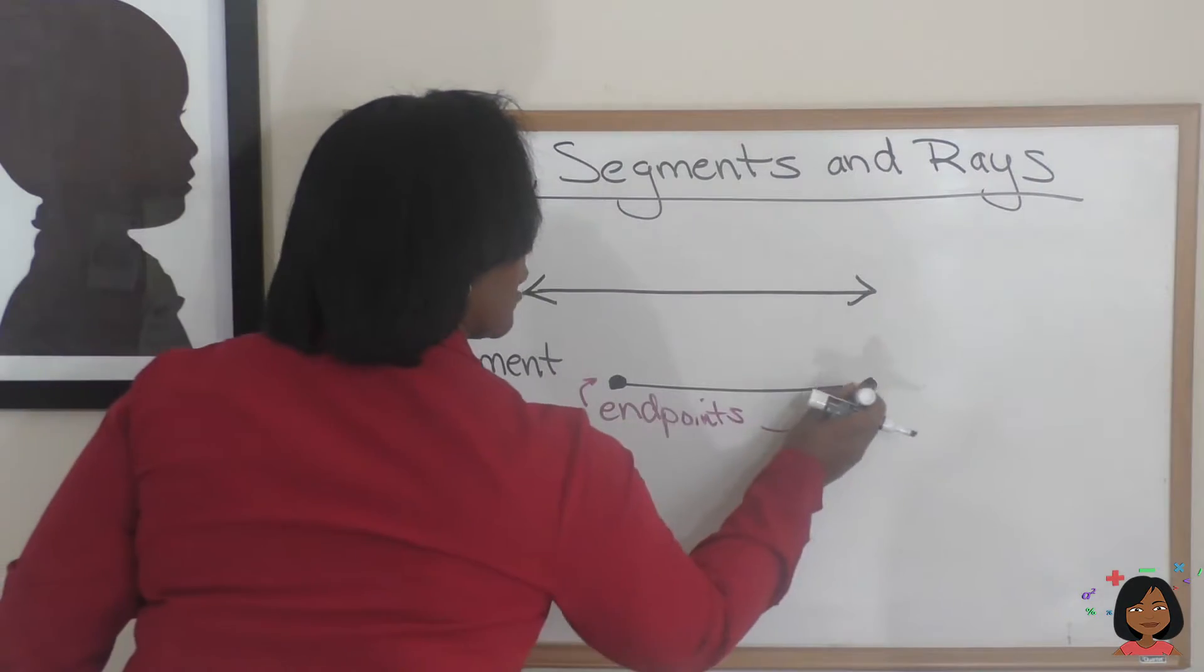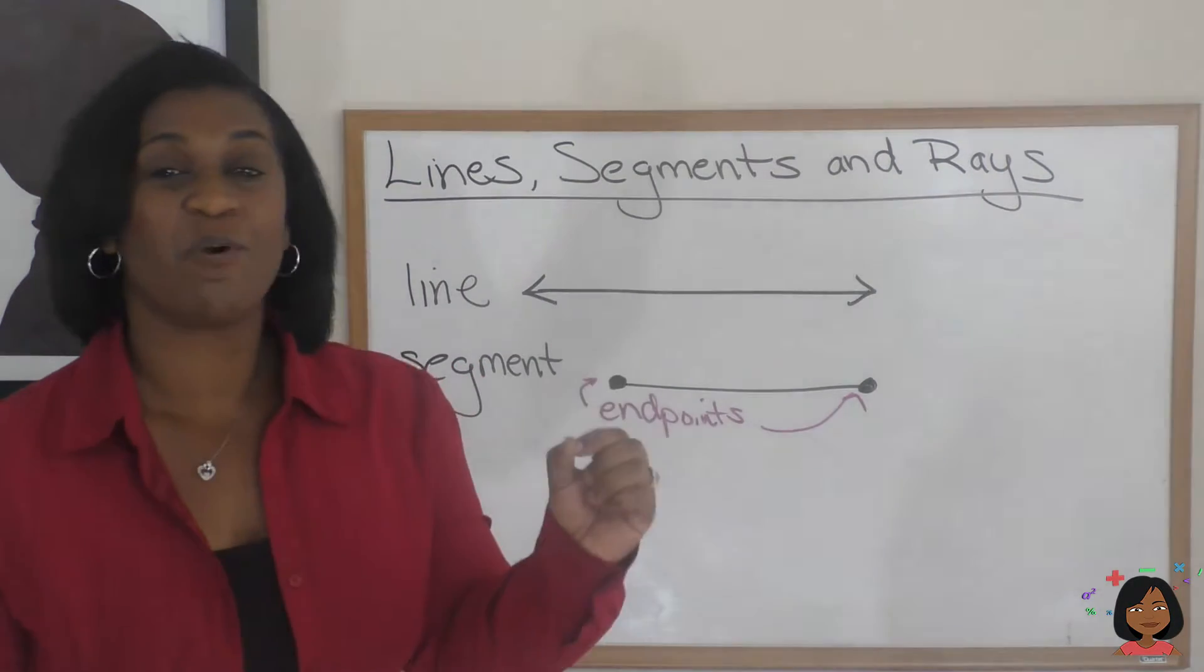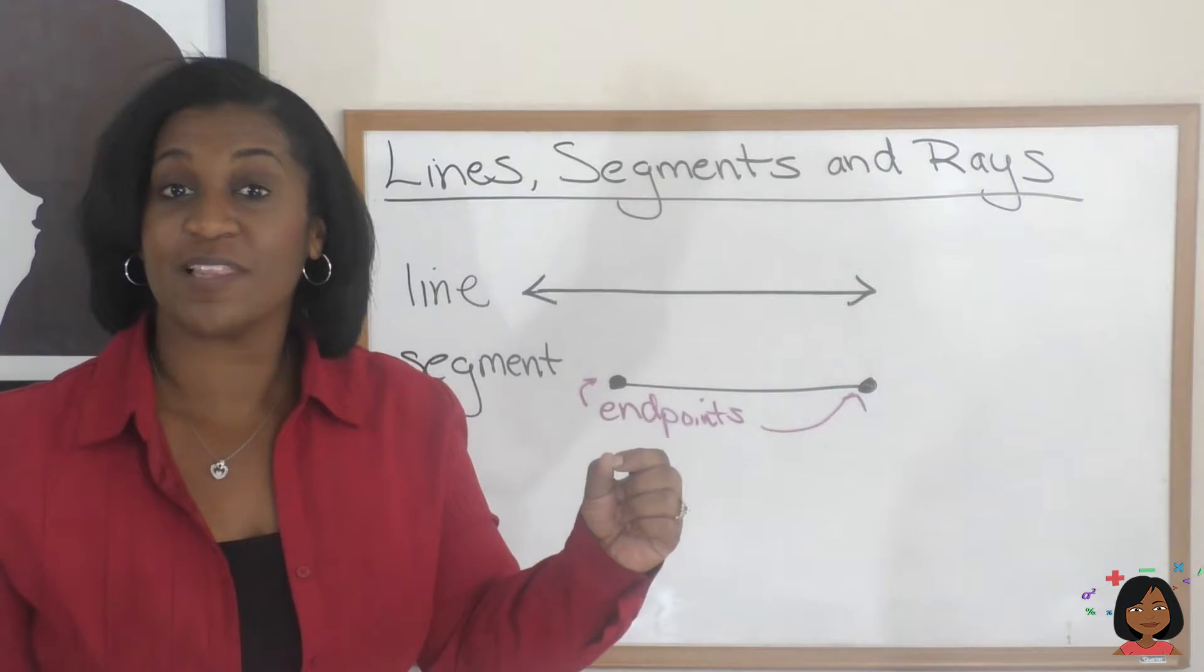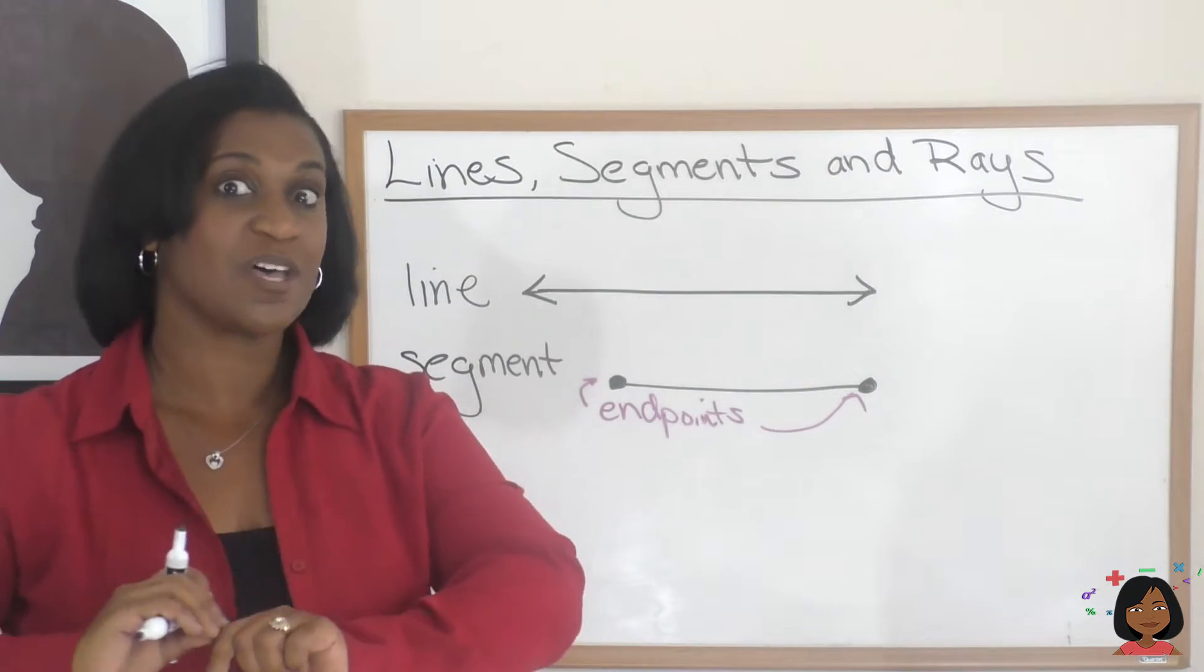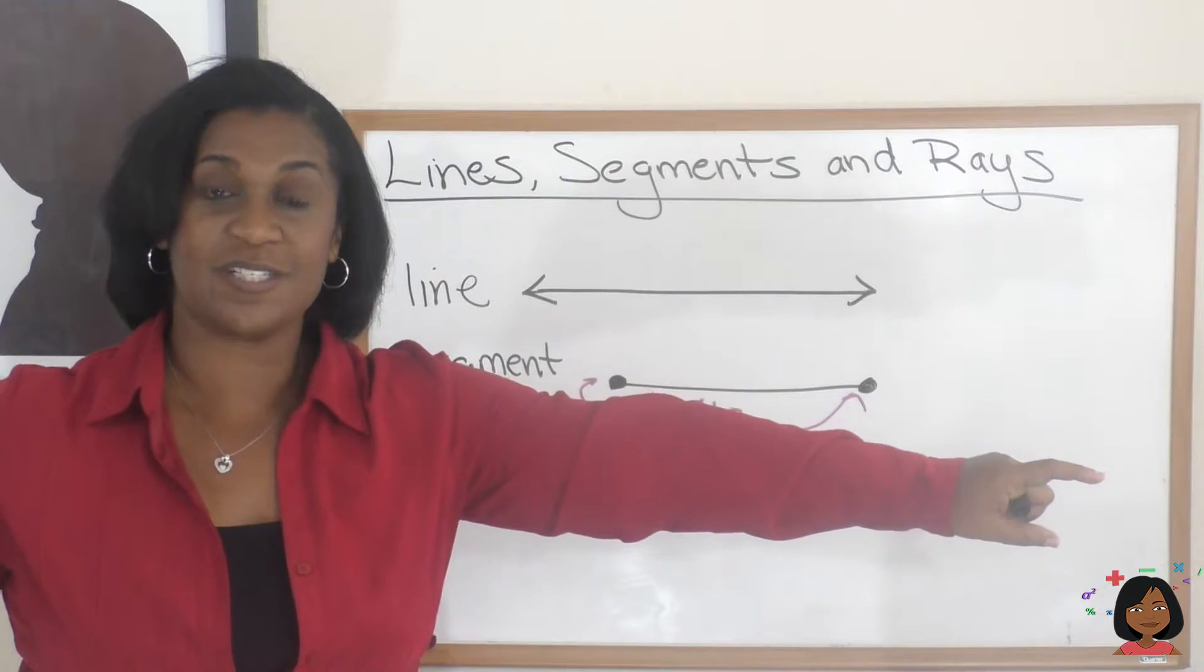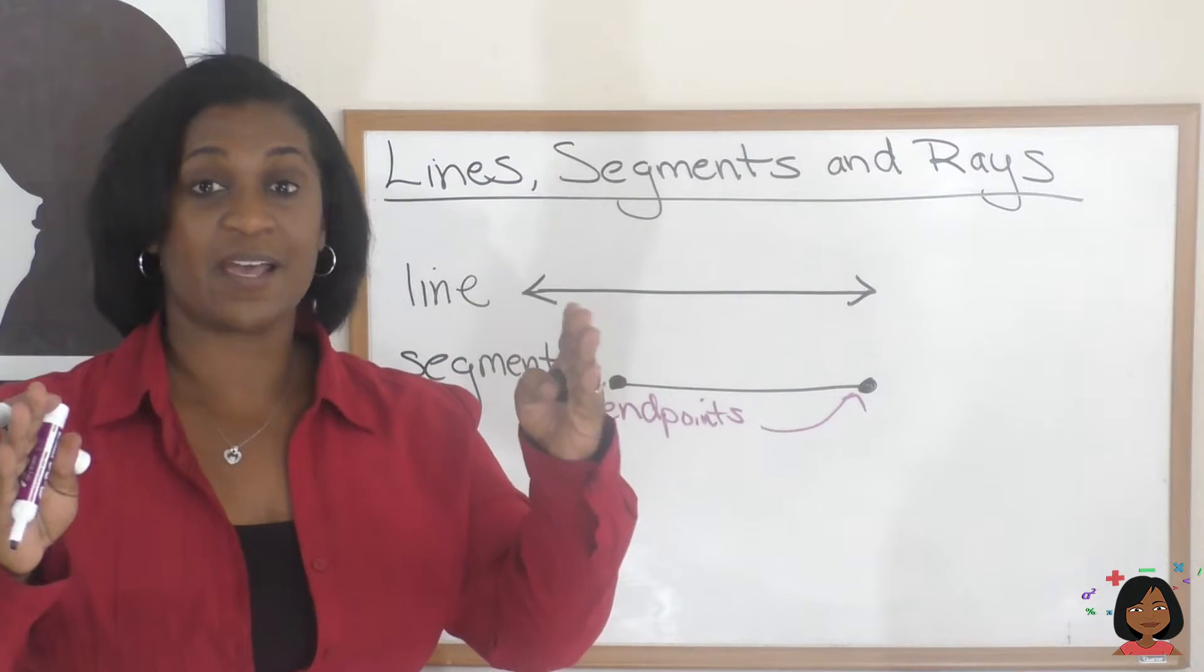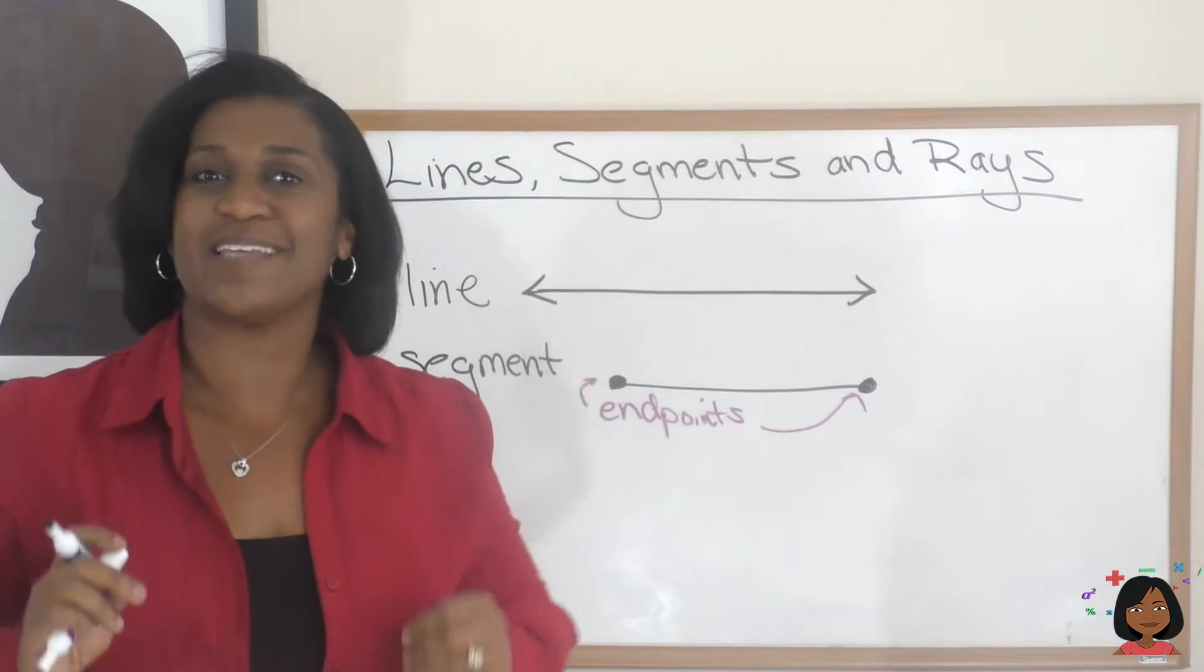There we go. One there. So it has two endpoints on either side of the line making it stop. So where the line goes on indefinitely in both directions, the endpoints make a segment and they stop at the endpoints.